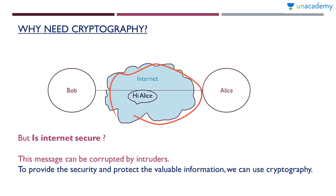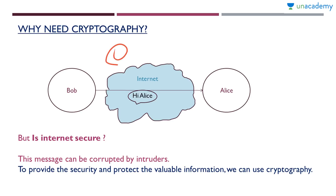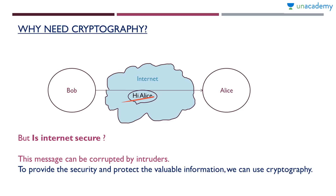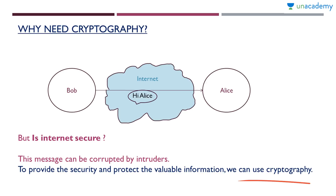The internet is a medium for this message, but it is not only a medium for this particular message — there is much more traffic here. There may be a person downloading some content, or a person uploading some content. There are many more data transmissions happening. This message can be corrupted, because there may be attackers and intruders trying to corrupt our messages or data. To provide security and protect valuable information, we can use cryptography.